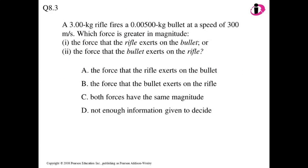A 3 kg rifle fires a bullet of 0.005 kg (5 grams) at a speed of 300 m/s. Which force is greater in magnitude: the force the rifle exerts on the bullet, or the force the bullet exerts on the rifle? You have seen in movies a gun is shot and the shooter experiences a pushback — that's because there is a reaction force on the rifle.